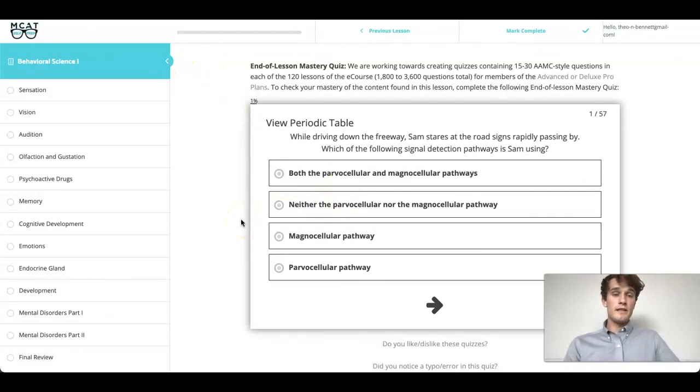Now, looking at this question, in order to answer it, we need to see whether the magno or parvocellular pathways are involved or both. Looking at the question, we can see that Sam is staring at road signs that are passing quickly by. And so this tells me that the magnocellular pathway is involved because again, motion is involved. So I can get rid of answer choices B and D.